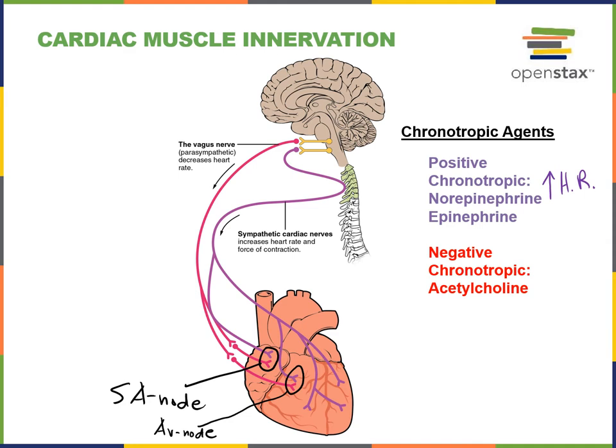In contrast, the parasympathetic division has the opposite effect. The neurotransmitter acetylcholine is released by postganglionic parasympathetic fibers in the heart to produce a decrease in heart rate. So acetylcholine is considered a negative chronotropic agent that decreases heart rate.